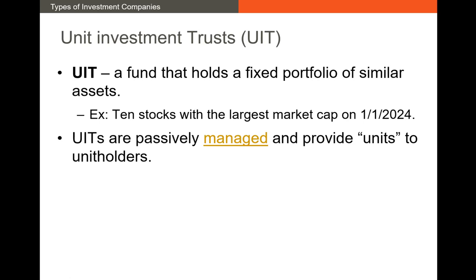Let's start with the most basic type: the UIT. A UIT is a fund that holds a fixed portfolio of similar assets. Once the unit investment trust is created and invests in certain assets, that's exactly what it holds — it really doesn't change. These things are passively managed. It might be, for example, the 10 stocks with the largest market cap on January 1st of 2024.